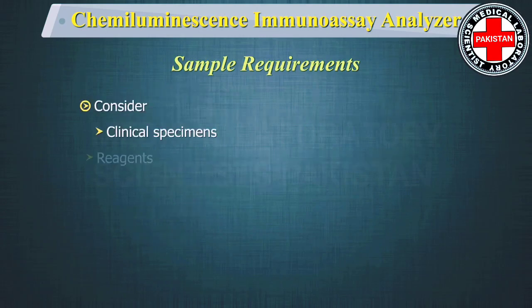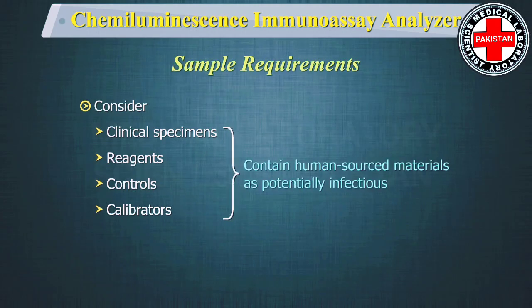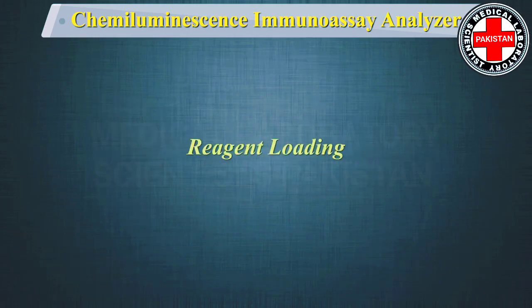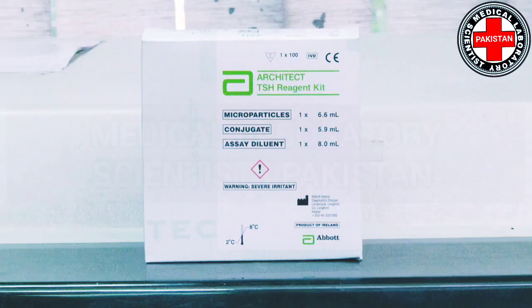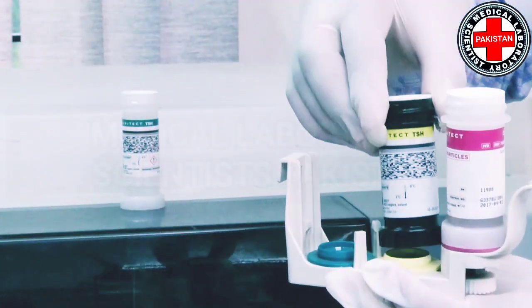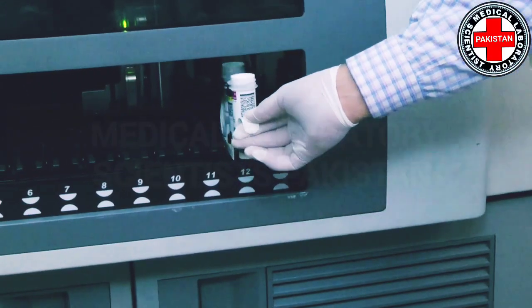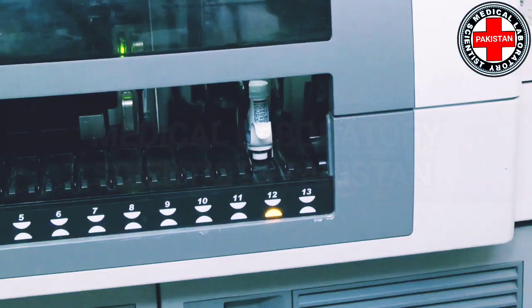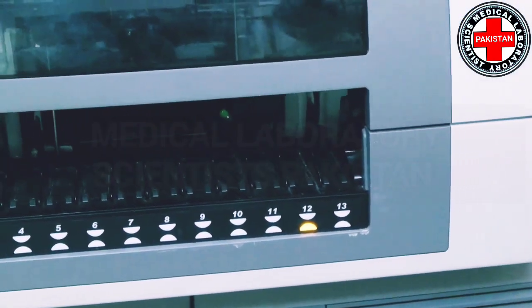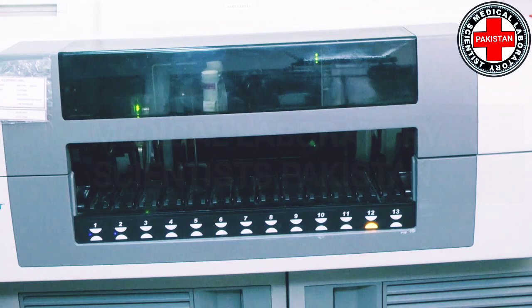Consider all clinical specimens, reagents, controls, and calibrators that contain human source materials as potentially infectious. The TSH reagent kit includes the microparticle reagent, the conjugate, and the assay diluent. Place reagent bottles on the matching coloured sections of the reagent carrier and load them into the machine. The carrier transport picks up the carrier and moves it past the barcode reader, which identifies the reagent kit, and the carrier transport loads the carrier onto the reagent carousel.